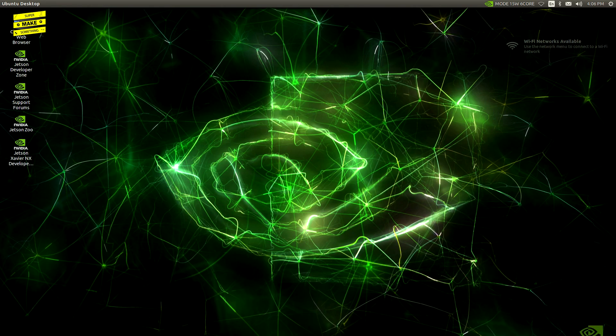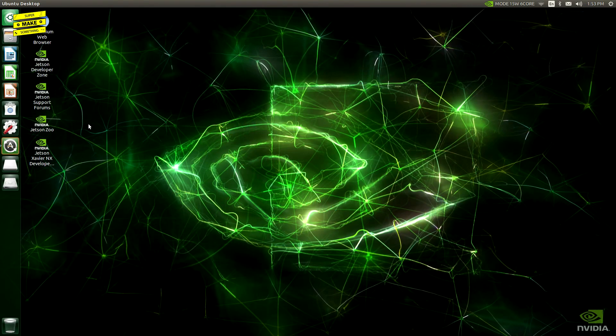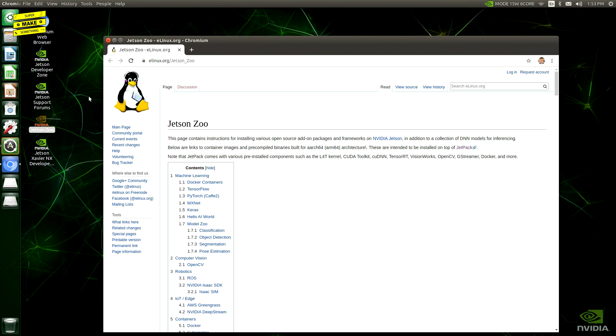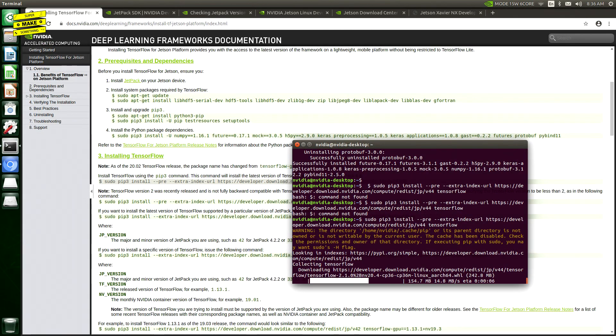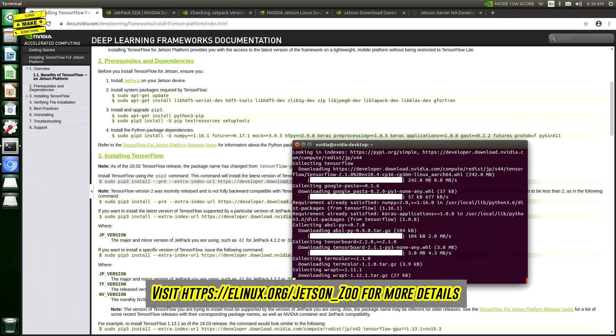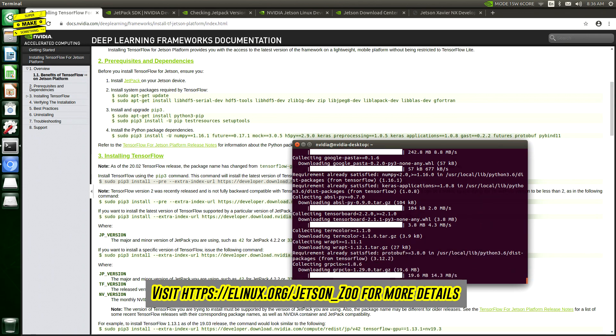Like the Nano, the Xavier NX runs a full Linux operating system, which makes the computer incredibly easy to use. After connecting to Wi-Fi and verifying that everything worked, I next headed to the Jetson Zoo website using the shortcut on the desktop, and followed their instructions to set up TensorFlow and various other packages that I may need for developing future machine learning applications.